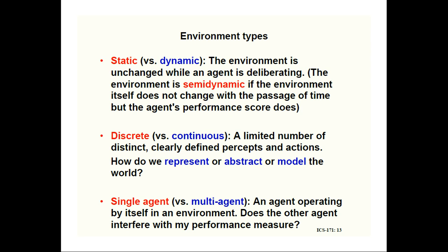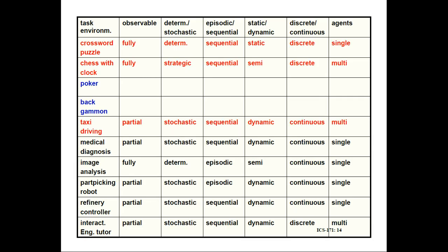Discrete means there is only a fixed set of percepts and actions — we can predict what percepts and actions are available and they do not change. Continuous means as we proceed, new actions and percepts are discovered. For single-agent versus multi-agent: single-agent involves only one agent — for example, a crossword puzzle. Multi-agent involves more than one agent — for example, a chess game. A chess taxi driver agent is also an example of a multi-agent environment.